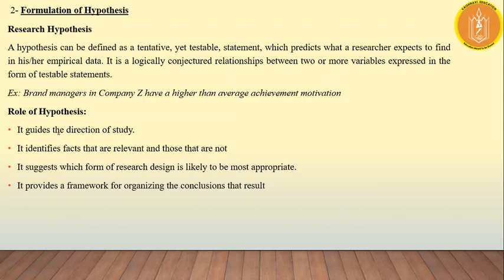Next is formulation of hypothesis. After completing the first step — knowing our research problem and doing extensive literature review — we create a tentative solution or tentative statement. It is not yet proven; it is still tentative and will be proven when we analyze our data. A research hypothesis is a tentative yet testable statement which predicts what a researcher expects to find in their empirical data. It is a logically conjectured relationship between two or more variables expressed in the form of testable statements.